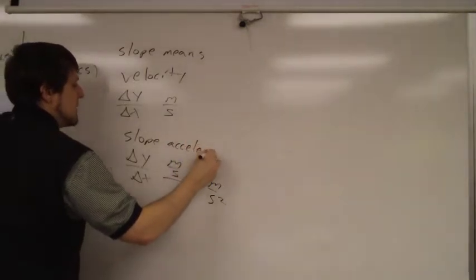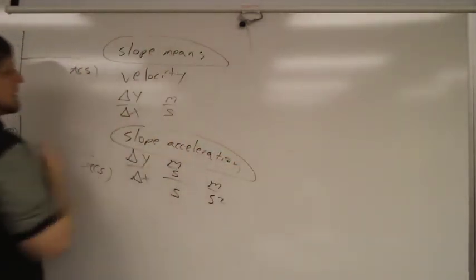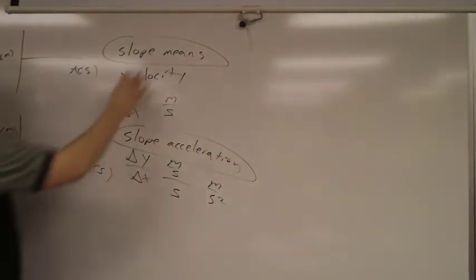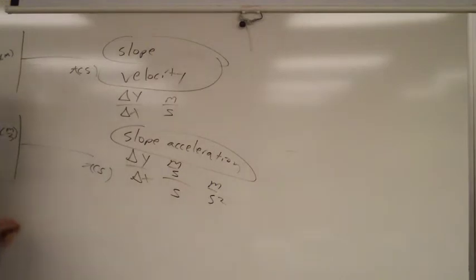Alright, so that's the review. That's where we're at at this point. We know what slopes mean on these. Slope means velocity. Slope is velocity here. Slope is acceleration here. Now we're going to add something else.